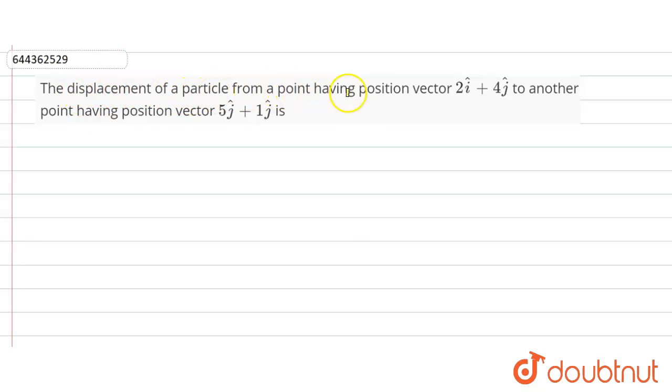Hello friends, question is given here: the displacement of a particle from a point having position vector 2i plus 4j to another point having position vector 5i plus 1j.